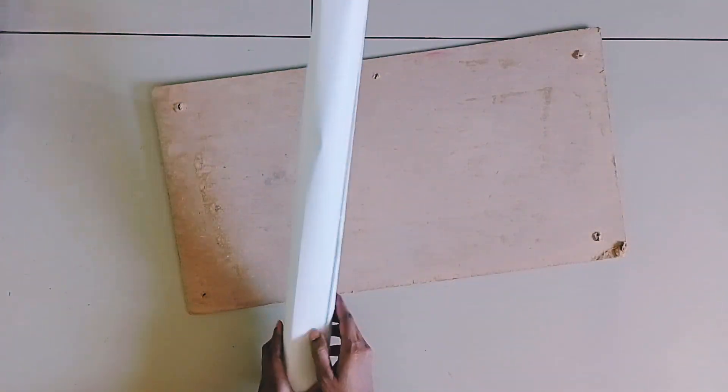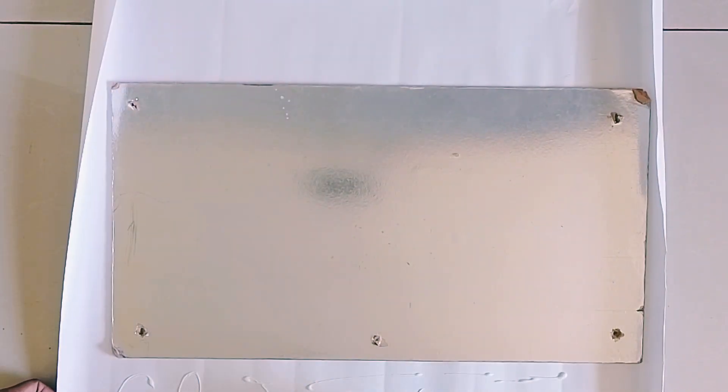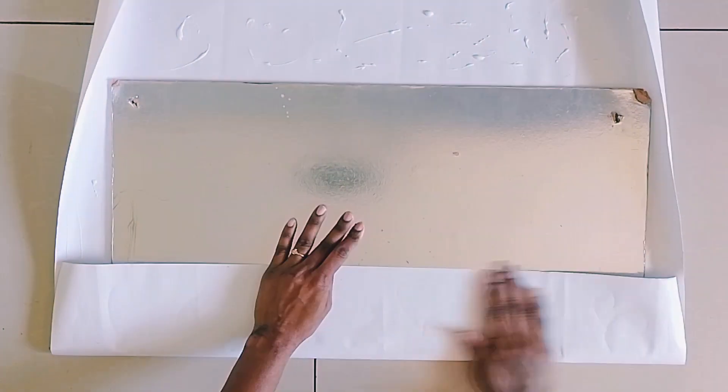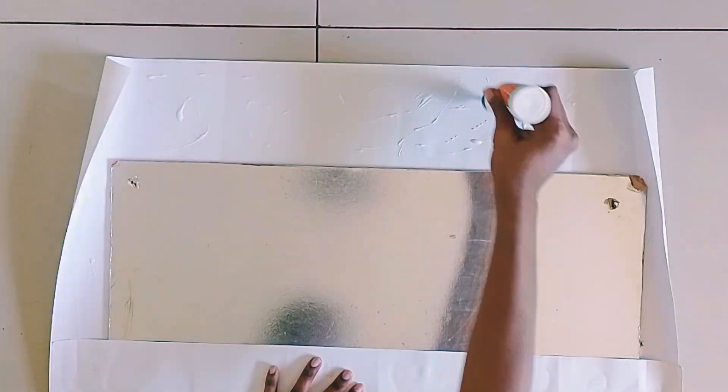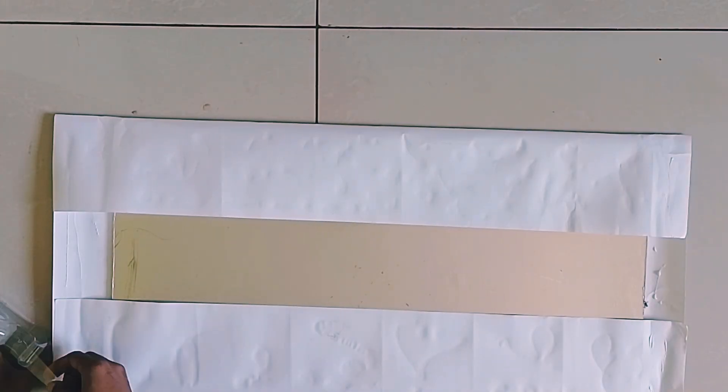Hi guys, welcome back to my channel Divine Ideas. Now I'm going to make an earthquake detector alarm. You should take a cardboard and a chart paper. You should glue the chart paper and cover the cardboard piece. Cover all the sides of the cardboard.